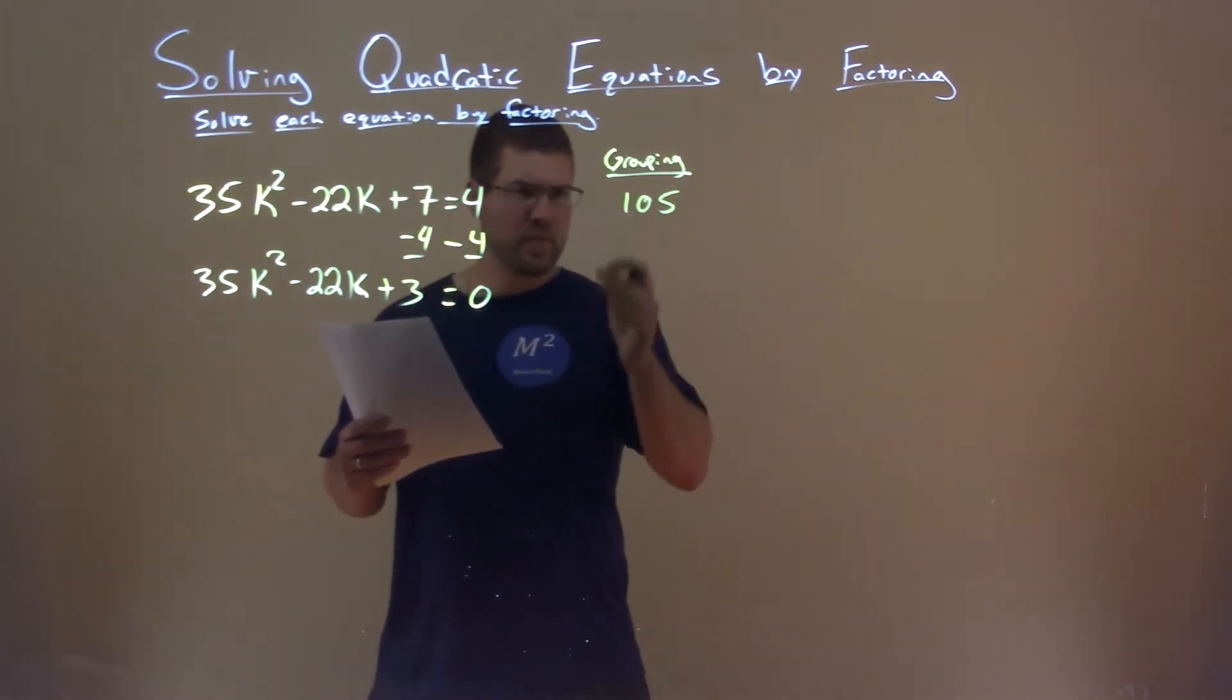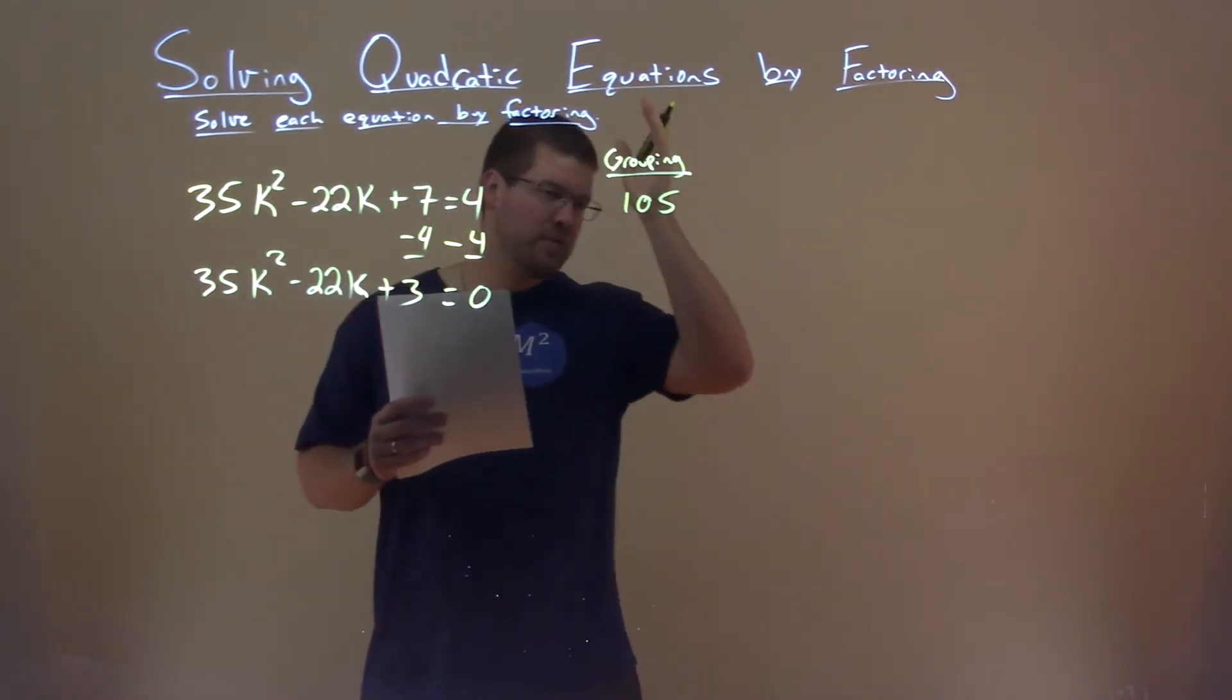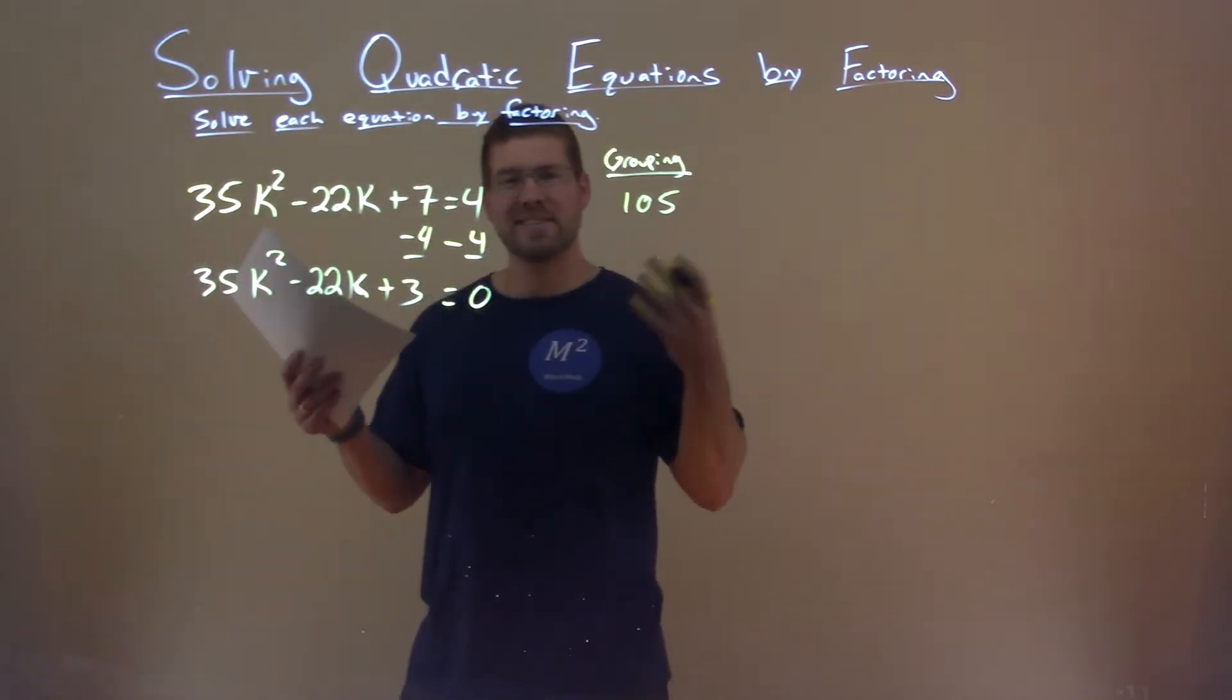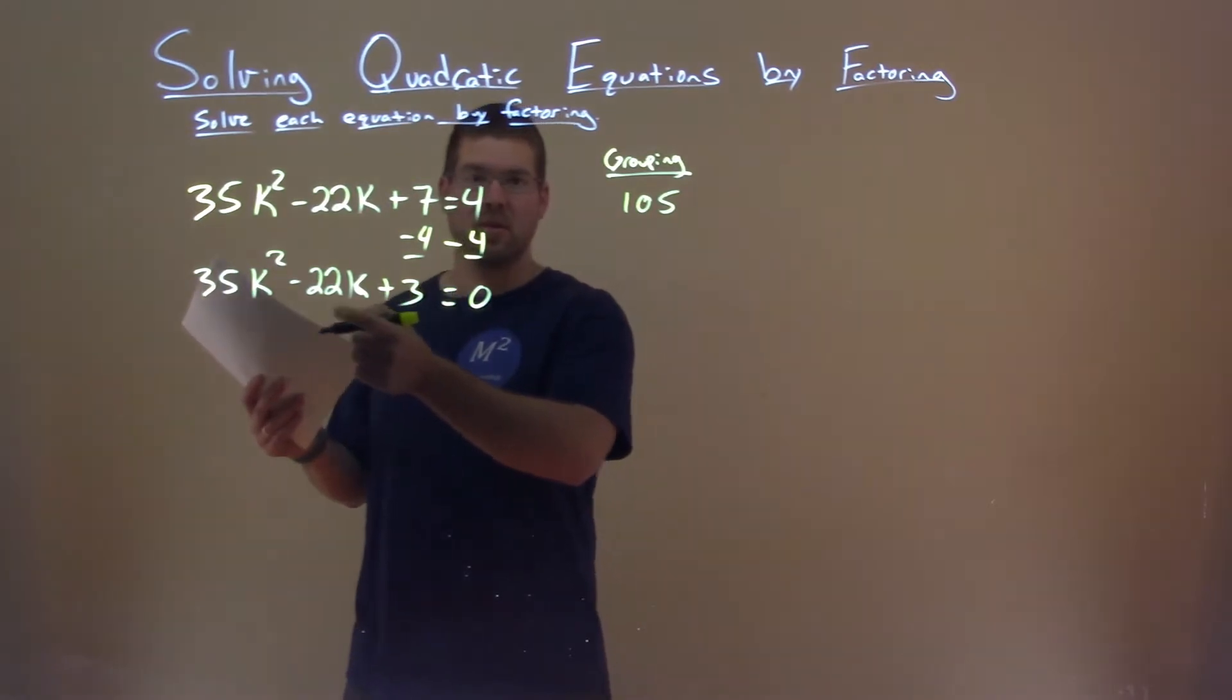When I go about this, especially if we have large numbers, I don't just try to list every single possible factor. I go through ones that I quickly can find and see which ones add to be a negative 22. That's the goal here.